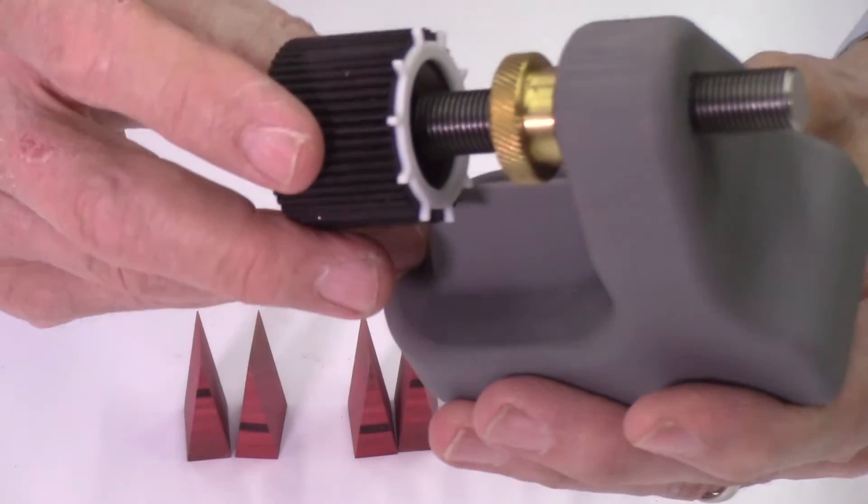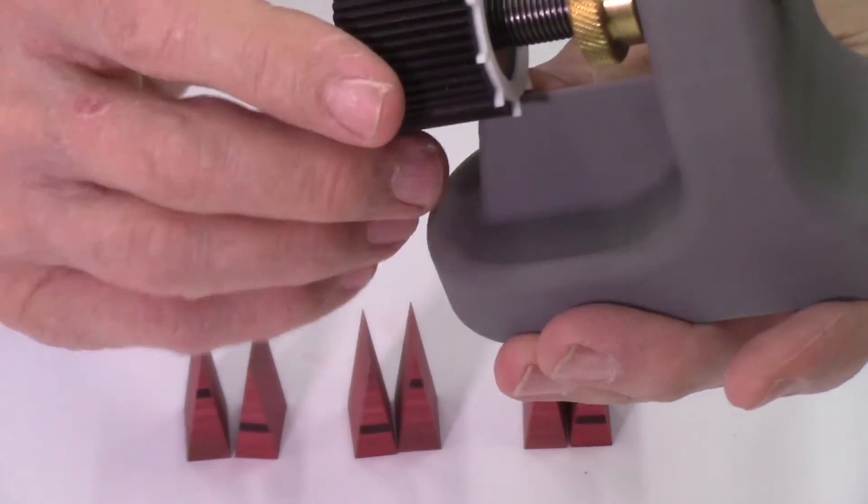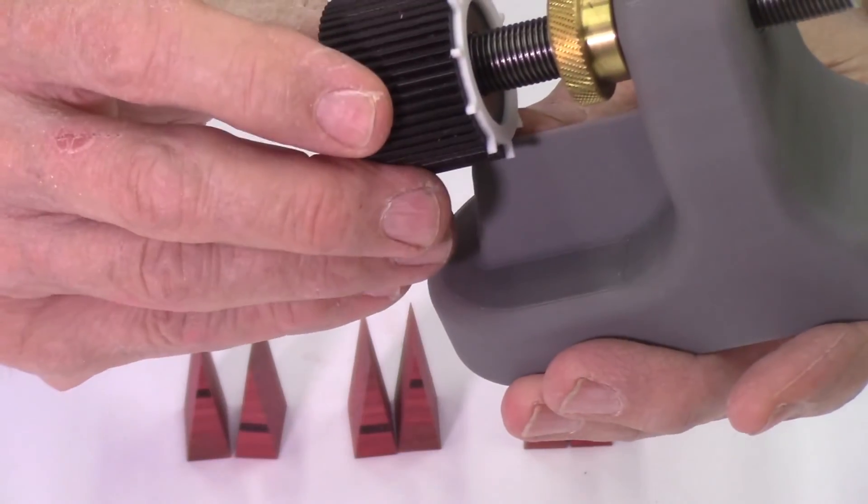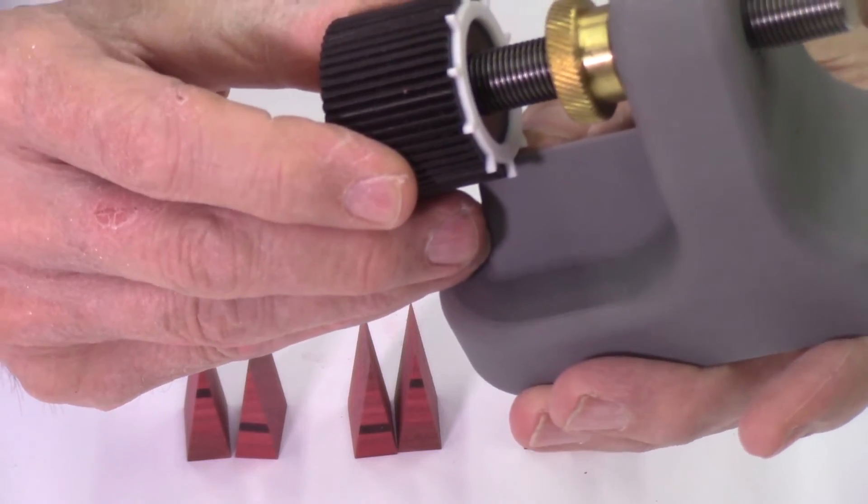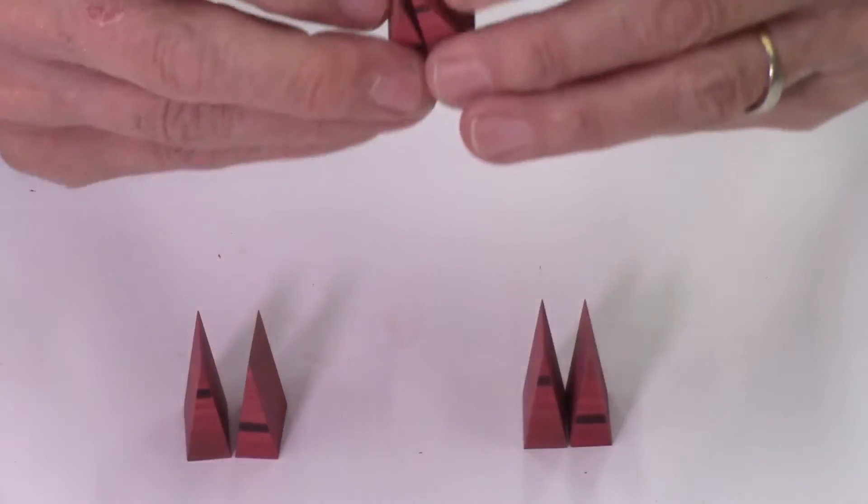So next I took my indexing system, which is set on one of those points, and I turned it in. I moved it in five thousandths of an inch, which is one pin position. And I made another set of segmented discs. And this one came out near perfect.